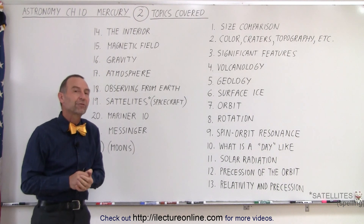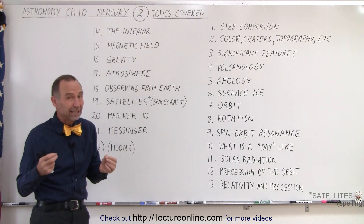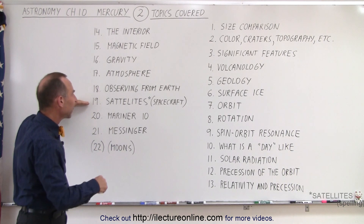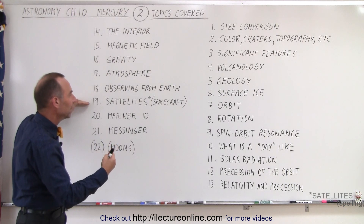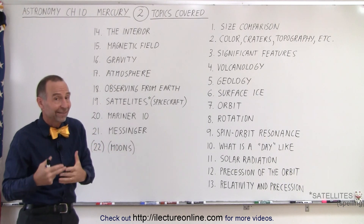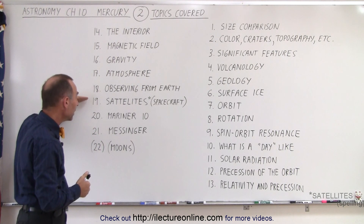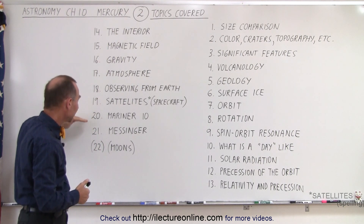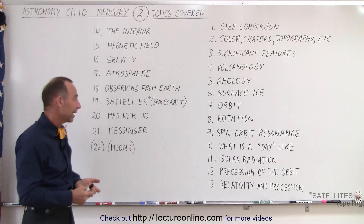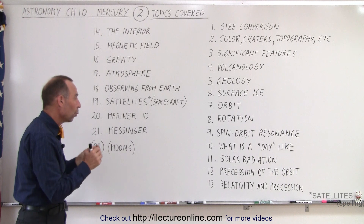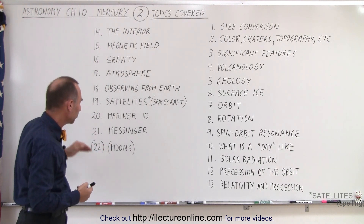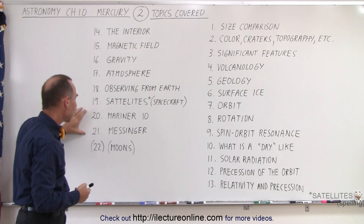We'll talk about what it's like to observe the planet from the Earth — and in Mercury's case, that's particularly challenging; we'll learn about why that is so. We'll talk about the satellites that visited the planet and in general what it takes to get there, because it's not as easy to send a satellite to Mercury. Then we'll talk about the specific things that the two satellites we did send — Mariner 10 and the Messenger satellite — what they were built to do, how they were built to get there, take pictures and measurements, and what they actually accomplished.